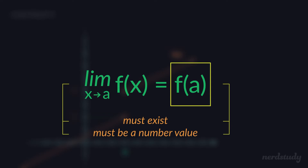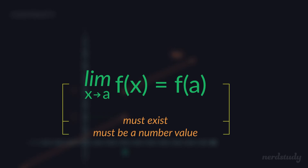For a function to be continuous at a, the limit needs to exist as a specific number value, and f(a) needs to exist as a number value equal to that limit. That's why we said: if you want a situation where a function is continuous at the number a, you need the limit as x approaches a to equal f(a) itself. For a function to be continuous at a number a, we need the limit as x approaches a to equal f(a). Let's try a few questions together to really strengthen this concept.